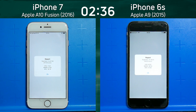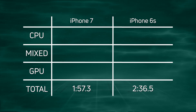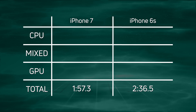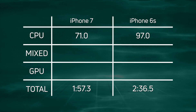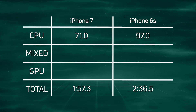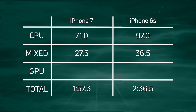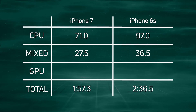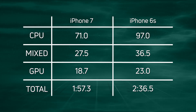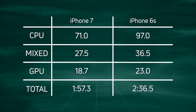Let's break down those scores and see exactly what happened. The iPhone 7 won overall with a final time of 1 minute 57.3, and 39.2 seconds later came in the iPhone 6s at 2 minutes 36.5. So where did all those seconds difference come from? On the CPU: 71 seconds versus 97 seconds — a 26-second difference between the Apple A9 and the Apple A10 Fusion, a remarkable feat. In the mixed CPU-GPU section: 27.5 versus 36.5 seconds, a difference of 9 seconds. And in the GPU UGIT test — same code, same screen resolution — 18.7 versus 23 seconds, giving a 4.3-second difference.